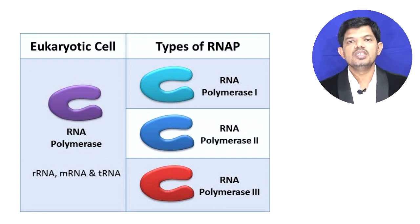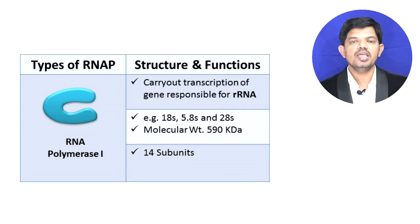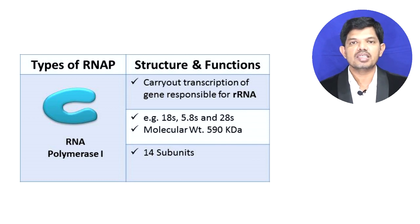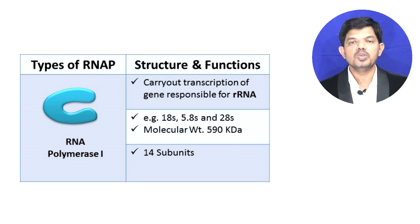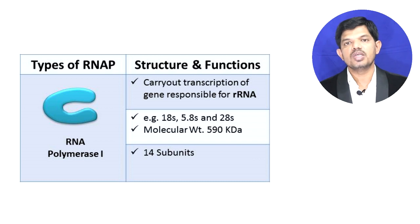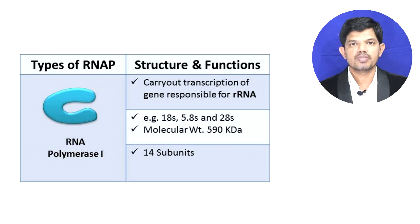First, we will learn about RNA polymerase 1. RNA polymerase 1 transcribes ribosomal RNA; examples of these ribosomal RNAs are 18S, 5.8S, and 28S rRNA. RNA polymerase 1 produces ribosomal RNA in an area within the nucleus called the nucleolus. It has a molecular weight of approximately 590 kD and is made up of 14 different subunits.